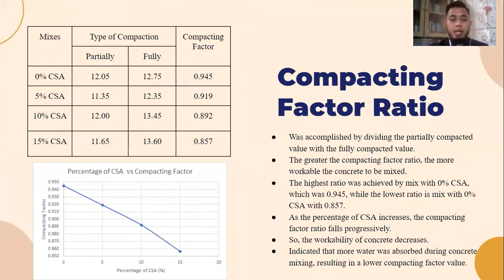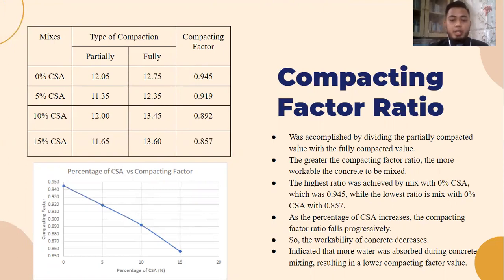For the compacting factor ratio, the result table and graph are visible in the slide. The compacting factor is calculated by dividing the partially compacted value by the fully compacted value. The greater the compacting factor, the more workable the concrete. The highest compacting factor is for Mix A at 0% CSA, which is 0.945, while the lowest is Mix D at 15% CSA with 0.857. As the percentage of CSA increases, the compacting factor ratio falls progressively, indicating that more water was absorbed during mixing, resulting in lower workability.